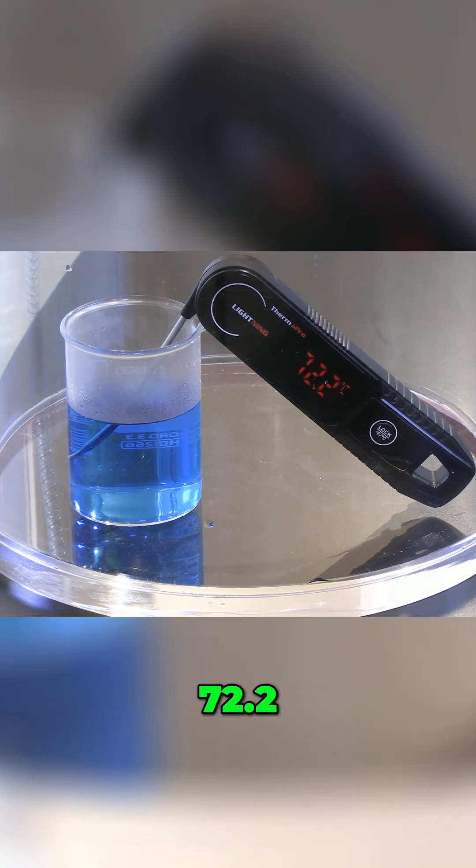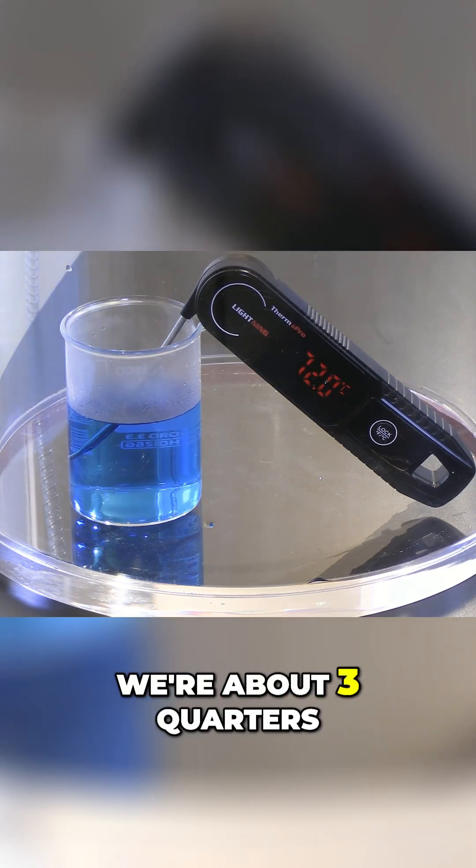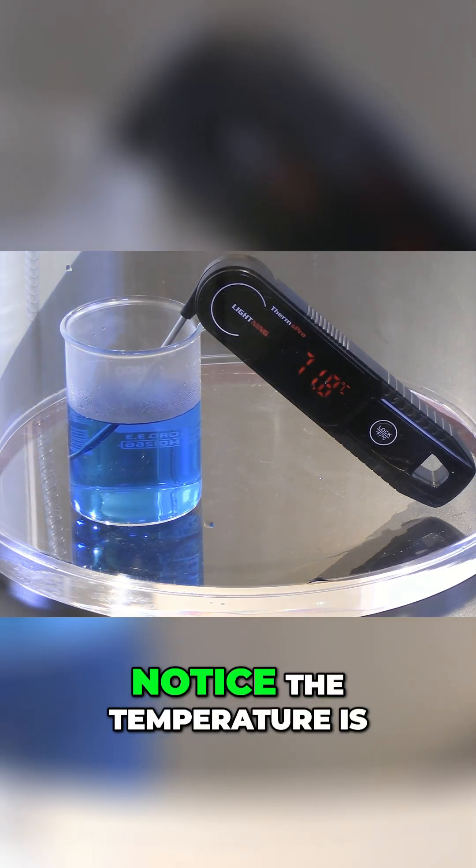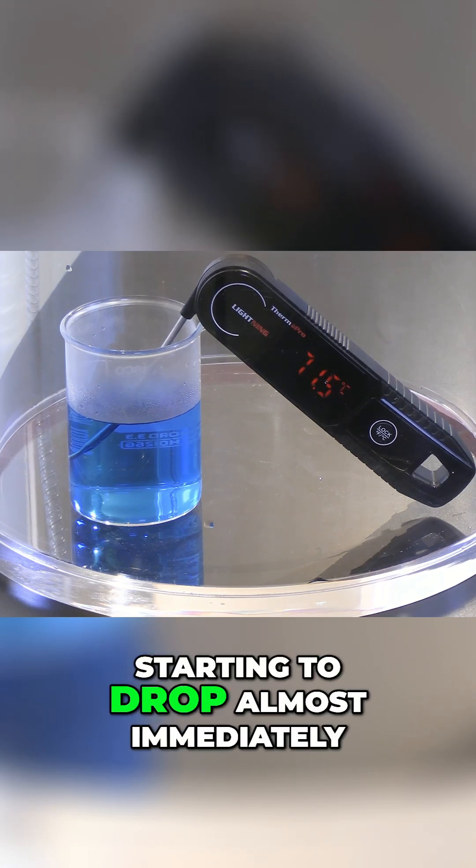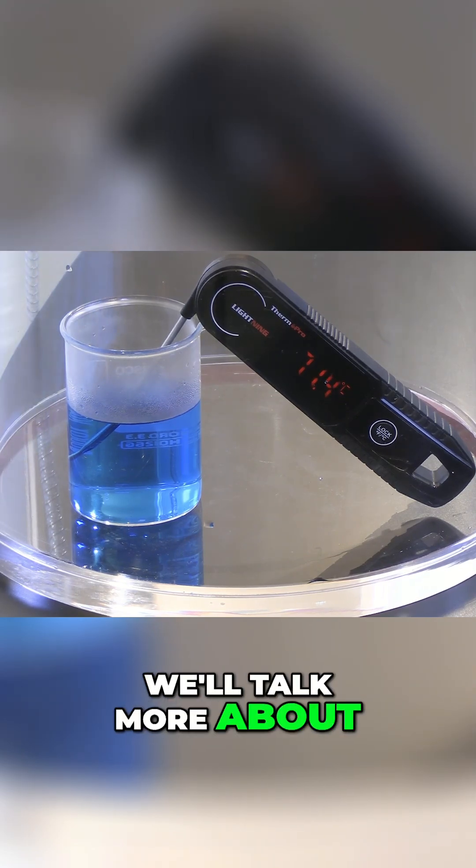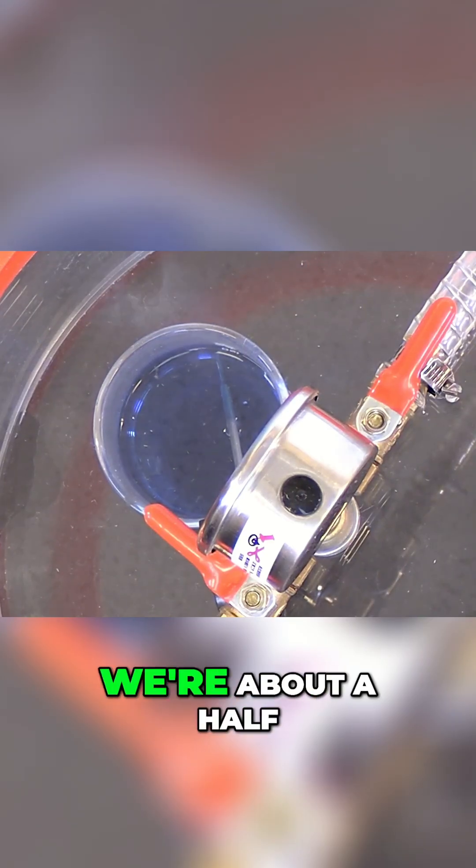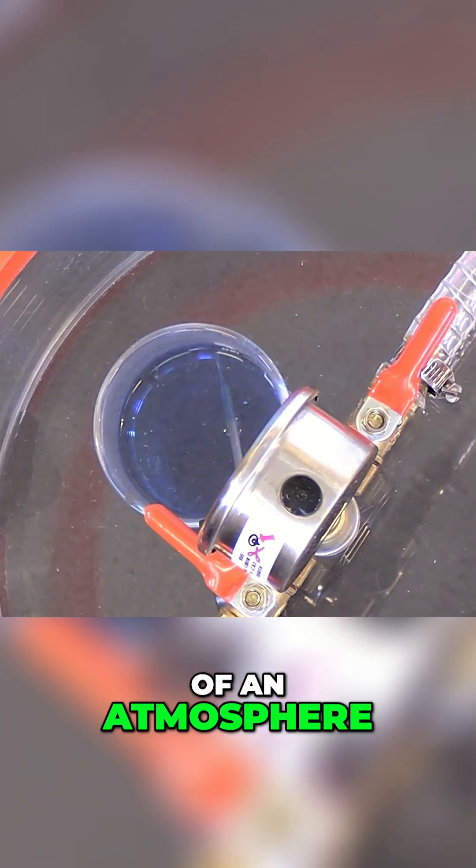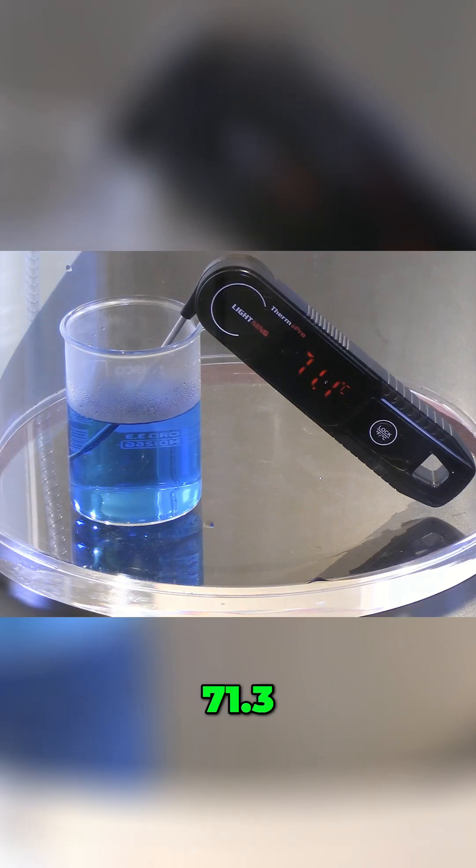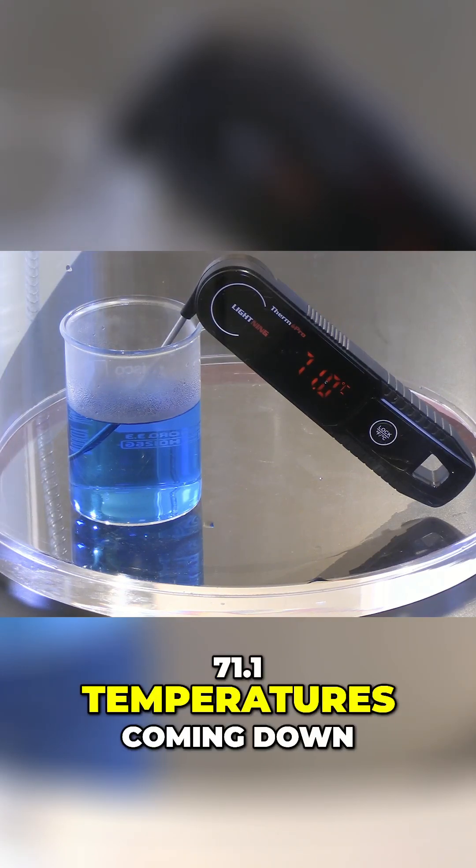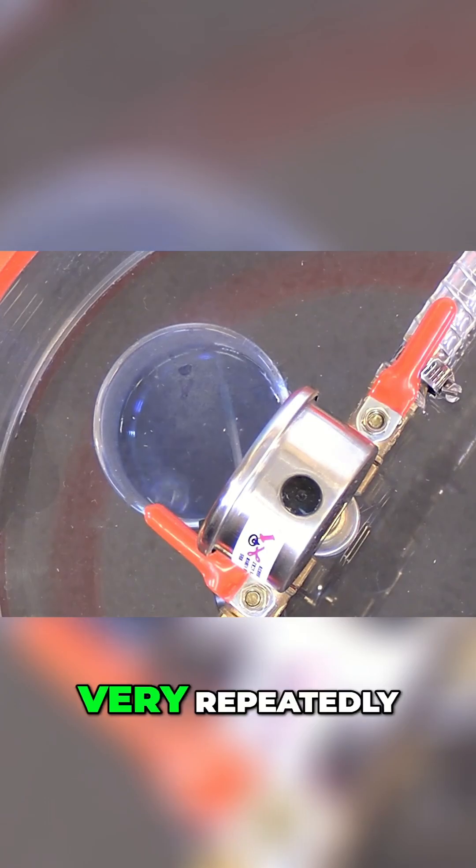Alright, 72.2. We're at about three quarters of an atmosphere. Notice the temperature is starting to drop almost immediately. We'll talk more about why that happens in just a second, but let's take a look. We're at about half an atmosphere. 71.3, 71.1. Temperature is coming down very repeatably.